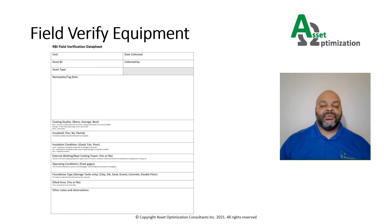The first step in the physical aspect of the field verification is determining where in the unit the equipment is located. Some aids that can be used are plot plans, process flow diagrams, or just asking unit operations personnel if all else fails.